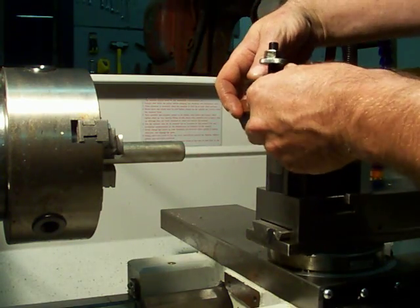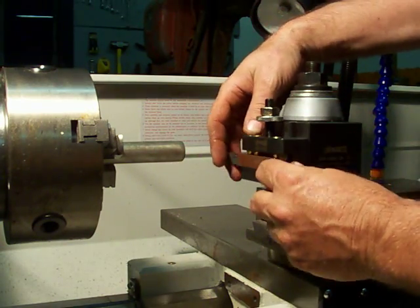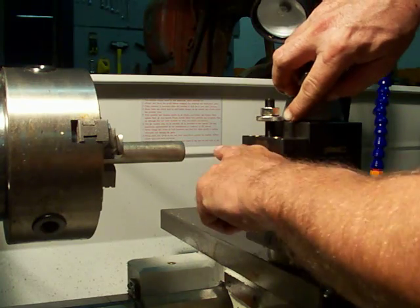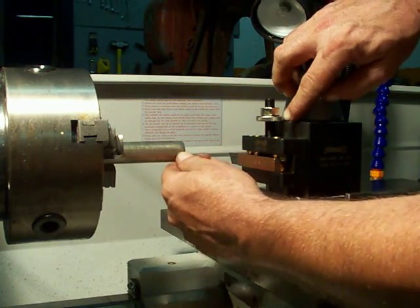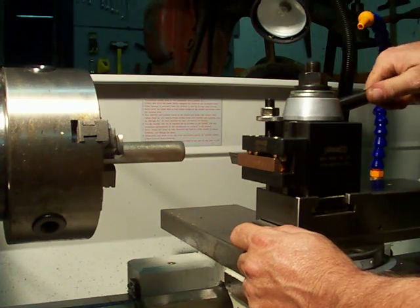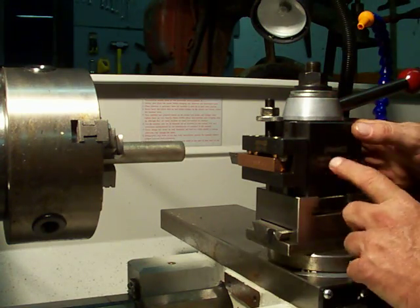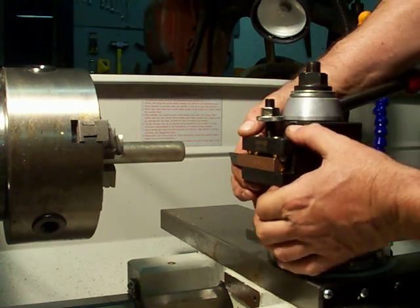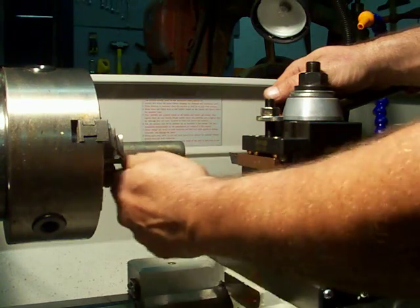When you drop this down over the tool post, your height stop automatically sets your tool to the center of your part. Your lever extracts the piston in your tool post and locks your tool in place. You're ready to make your outside cut.